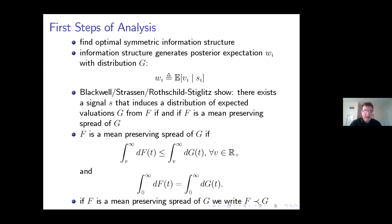A long set of results generalizing applications in economics — Blackwell, Strassen, Rothschild and Stiglitz — show that there exists a signal that induces a distribution of expected valuation G from the underlying value distribution F, if and only if F is a mean preserving spread of G. In other words, G is a contraction of F, because we can only provide less information. F is the mean preserving spread of G — that's the formal definition. We denote with the preceding relationship that F is dominated by G if F is the mean preserving spread of G. This uses the language of majorization, introduced in the 1920s by Hardy.